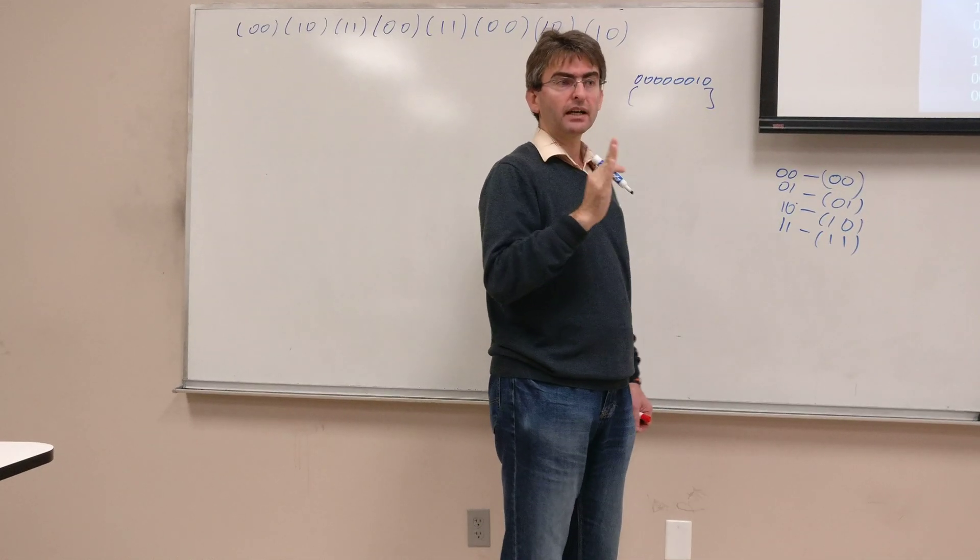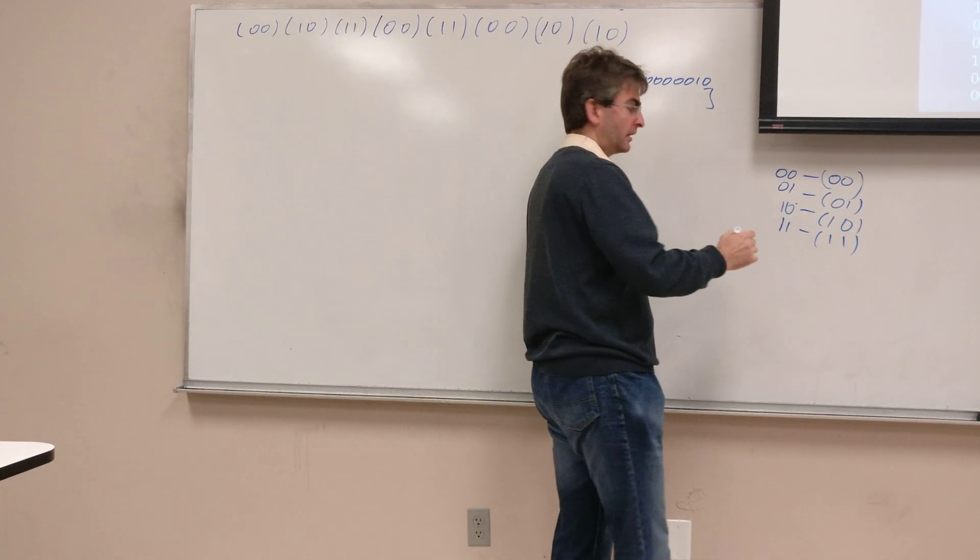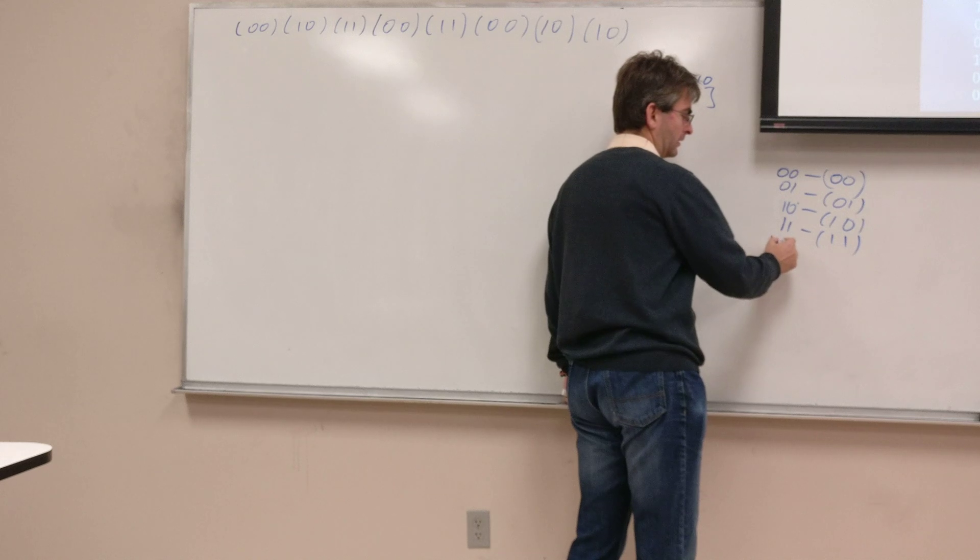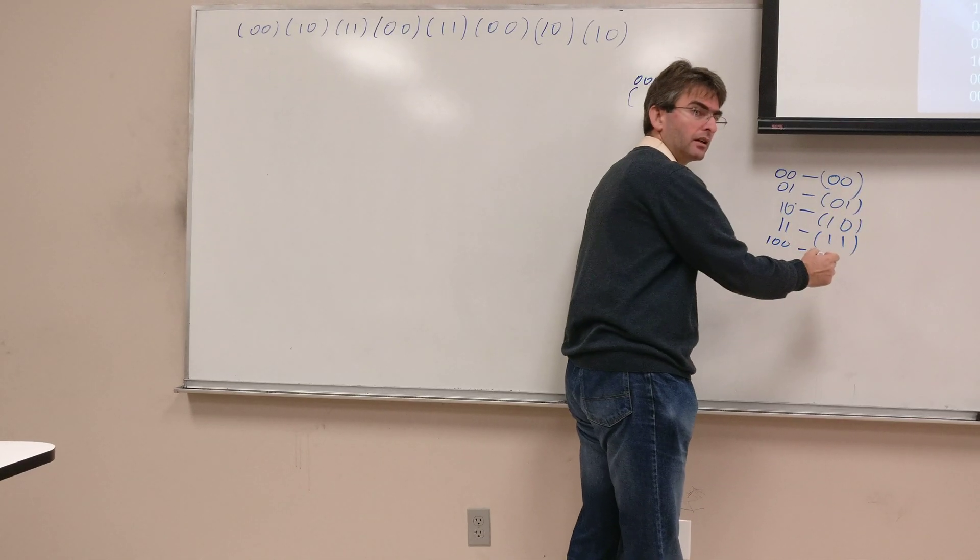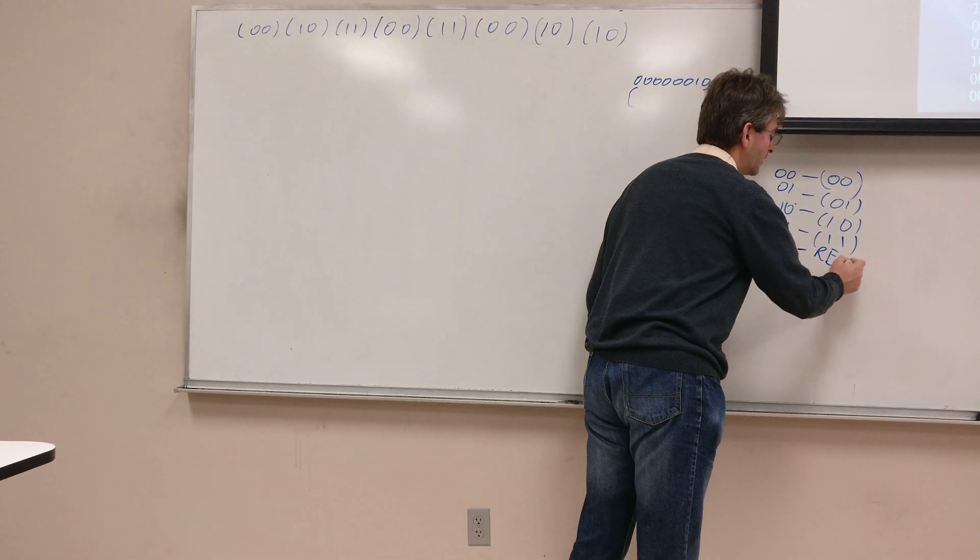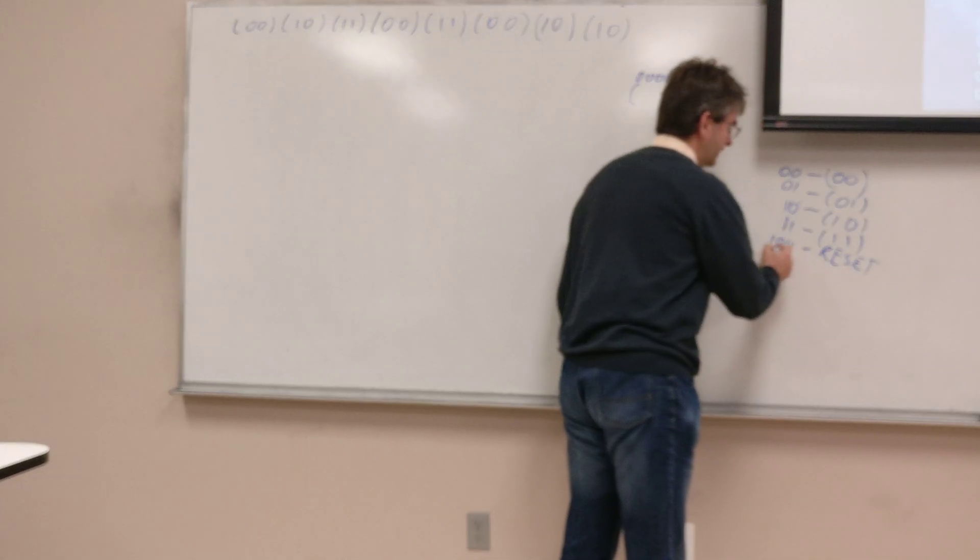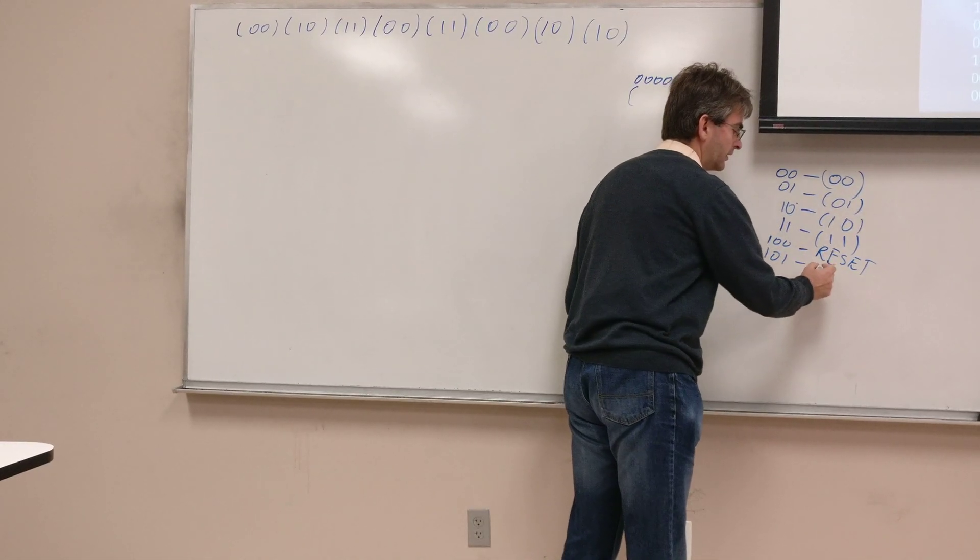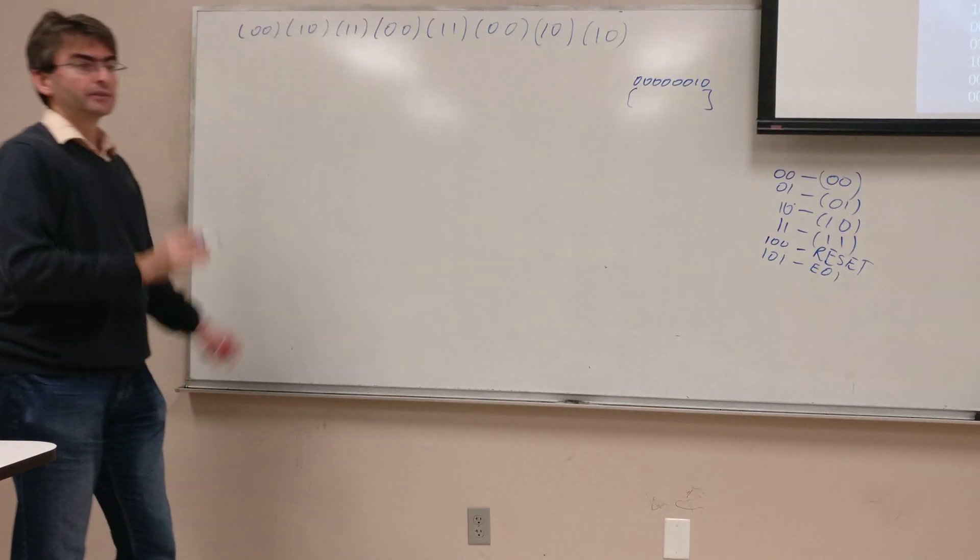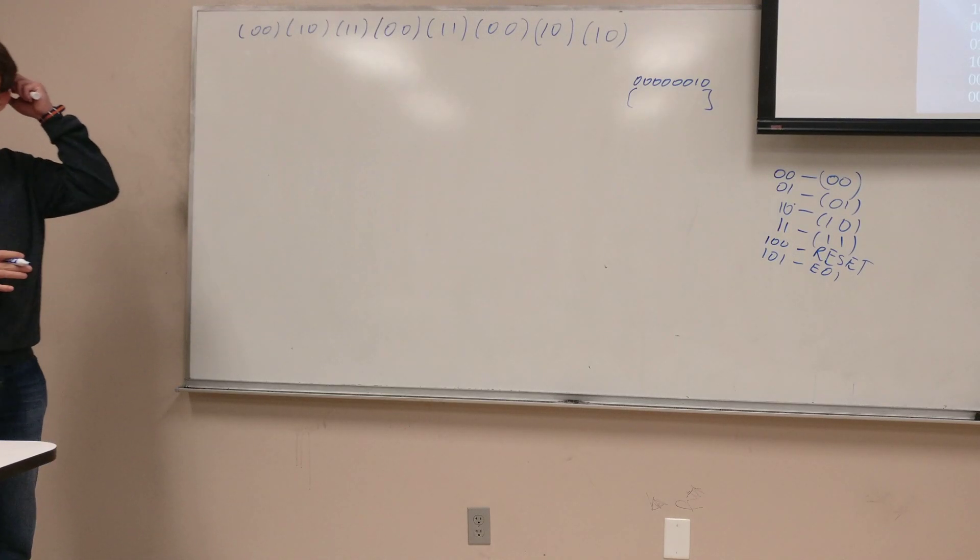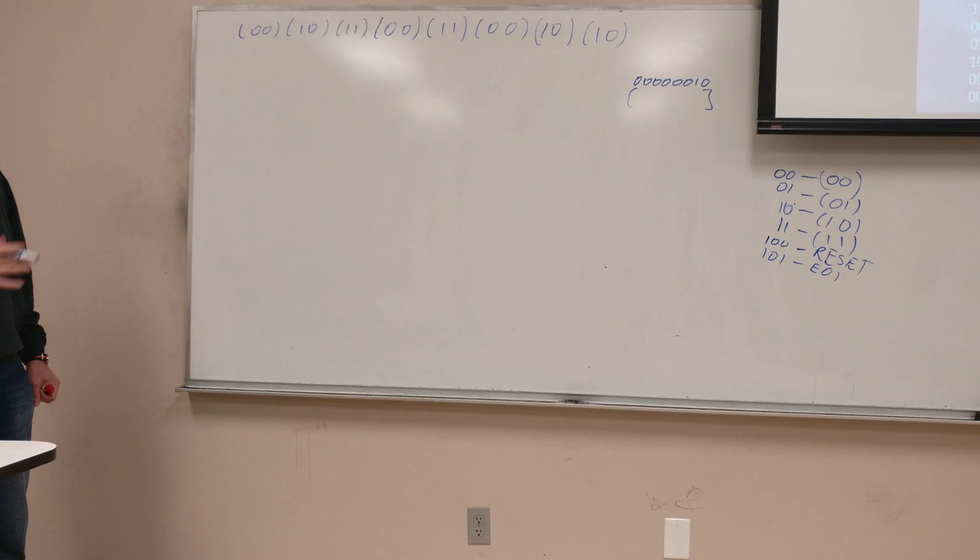And then there are two more values that are reserved. Do you remember them? The next one is for reset and the next one is for end. So this is the original dictionary.